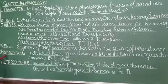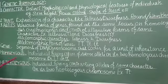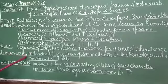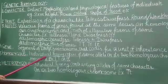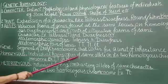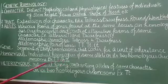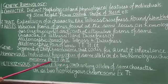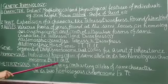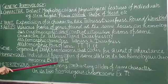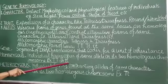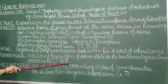Next is homozygous and heterozygous individuals. Homozygous individuals are the individuals having copies of same allele on its two homologous chromosomes. For example, capital T, capital T is homozygous dominant and small t, small t is homozygous recessive.